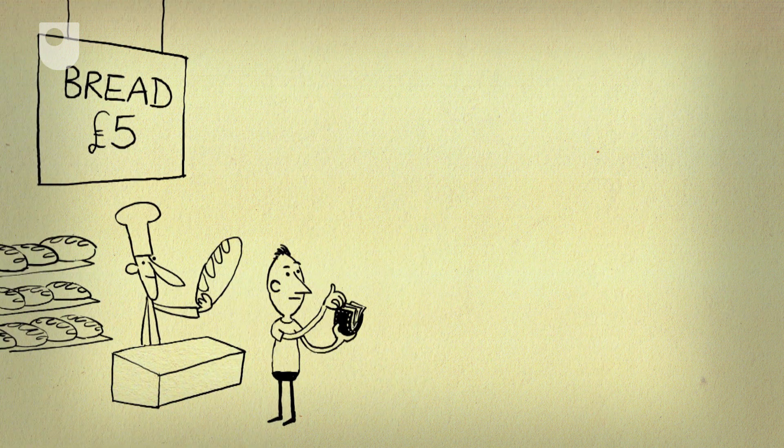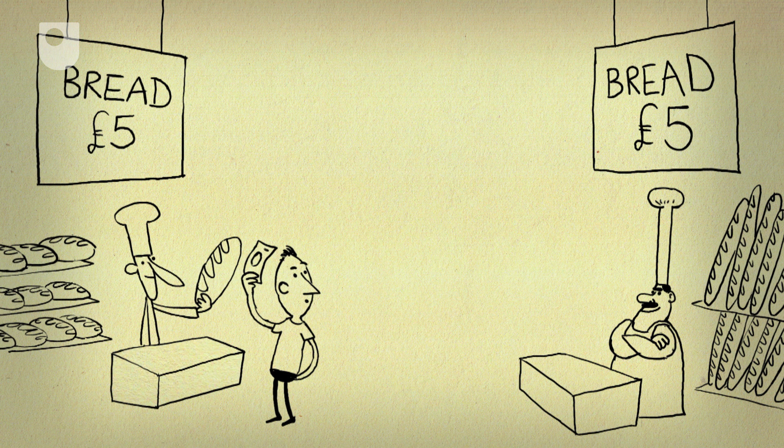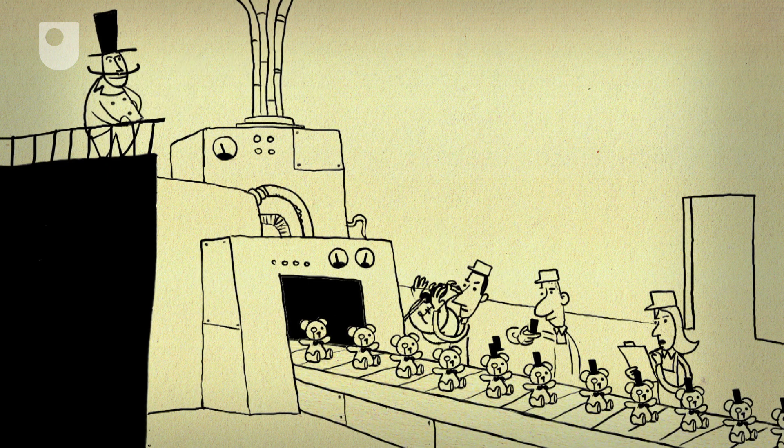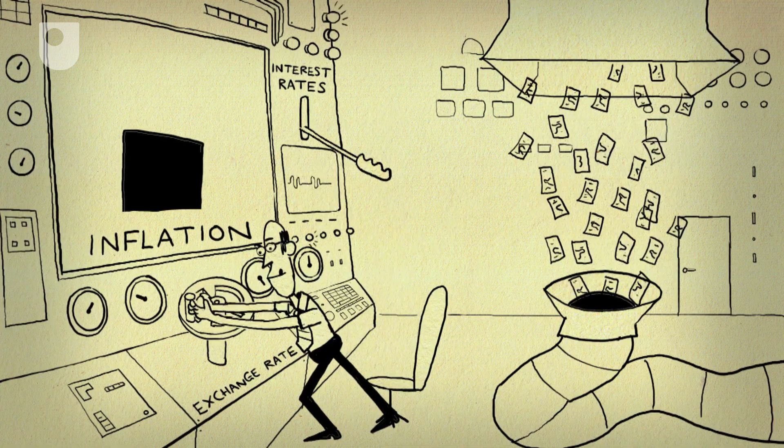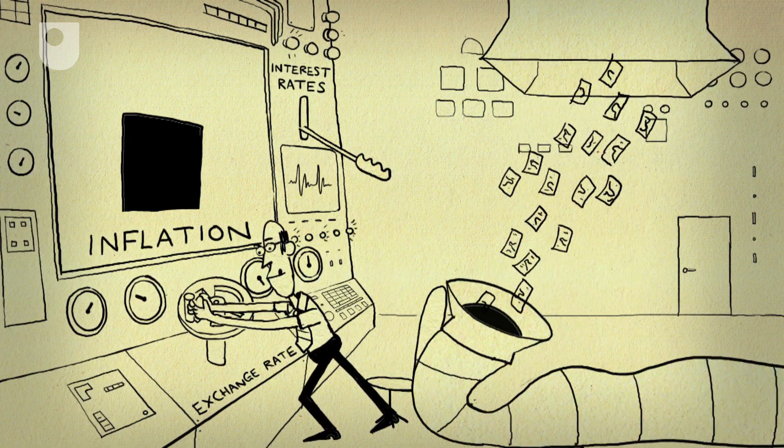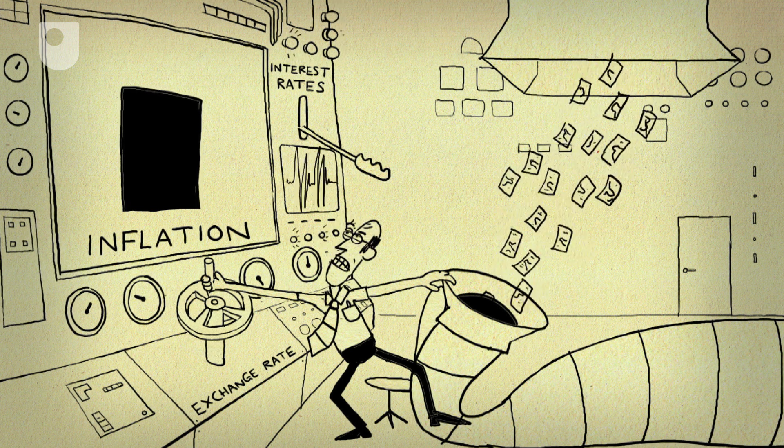When the price of something rises, people will supply more of it and buy less of it. If they expect inflation to go up, people will usually ask for higher wages, though they might not get them. And if they can see interest or exchange rates falling in one country, people with lots of money there will try to move it out faster than you can say double dip.